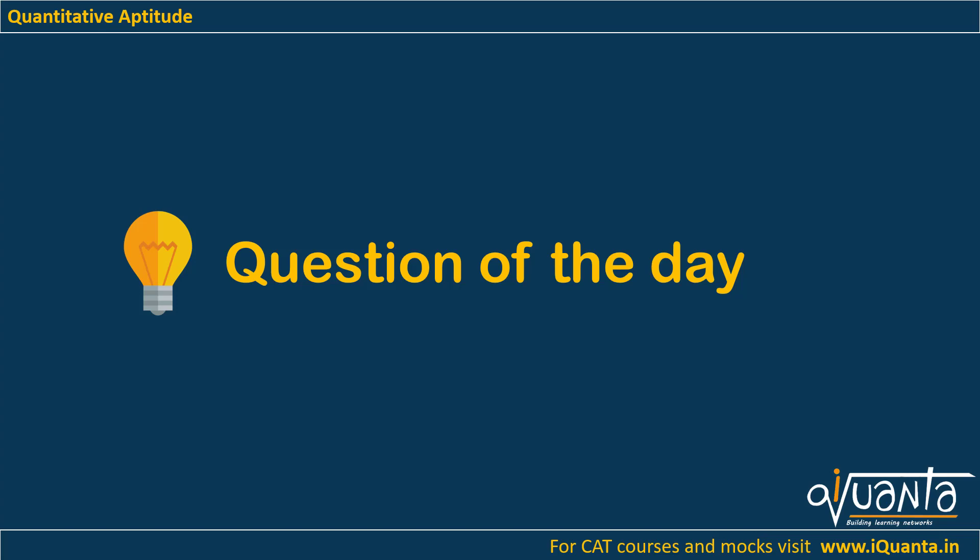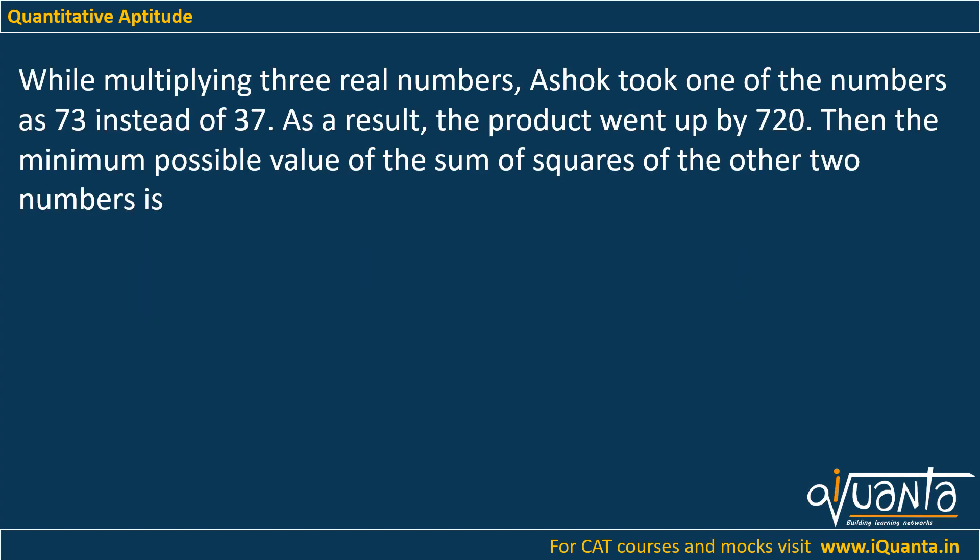Hello everyone, today's question of the day is a past CAT question. The question is: while multiplying three real numbers, Ashok took one of the numbers as 73 instead of 37. As a result, the product went up by 720. Then the minimum possible value of the sum of squares of the other two numbers is?